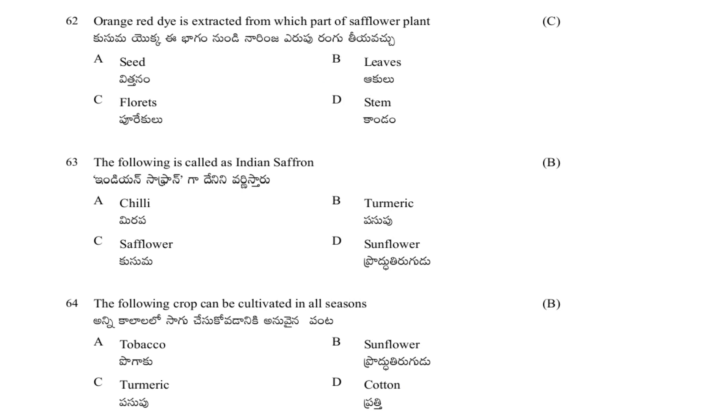Orange-red dye is extracted from which part of the safflower plant? Options: seed, leaves, floret, or stem. The answer is floret.